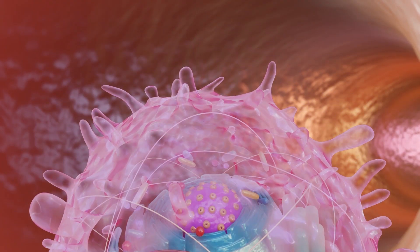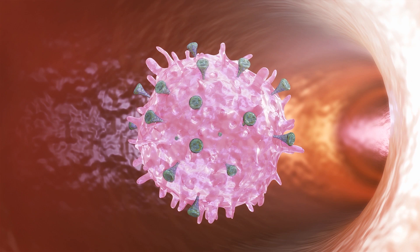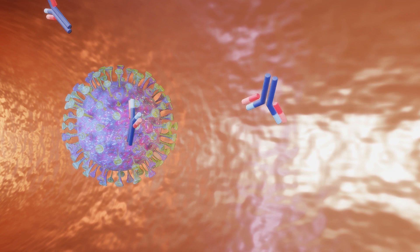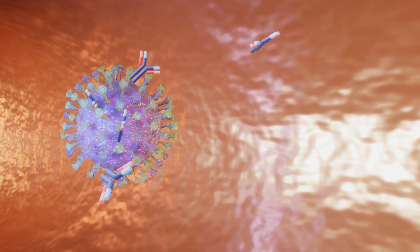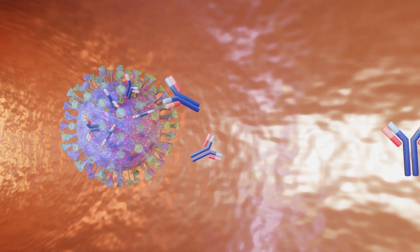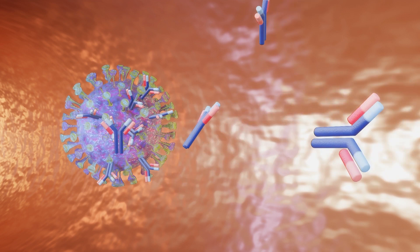Once the vector delivers this genetic code to a cell, it causes the cell to produce spike proteins. These spike proteins are harmless on their own, but they trigger the body to mount an immune response. This response produces antibodies and memory cells that will recognize SARS-CoV-2, the actual virus that causes COVID-19.